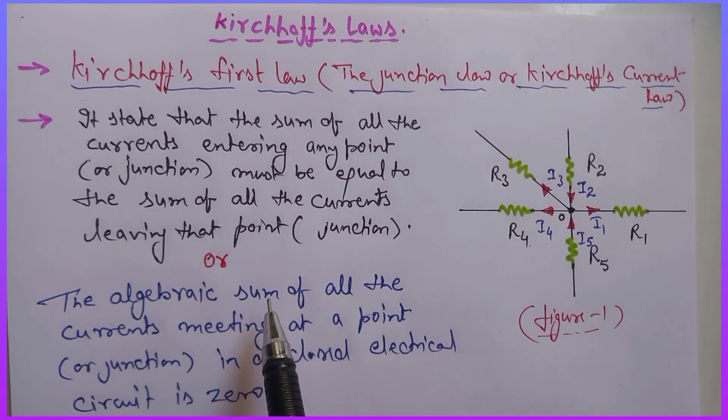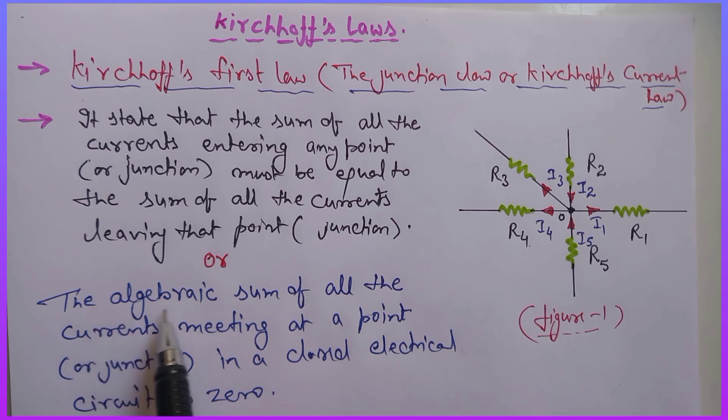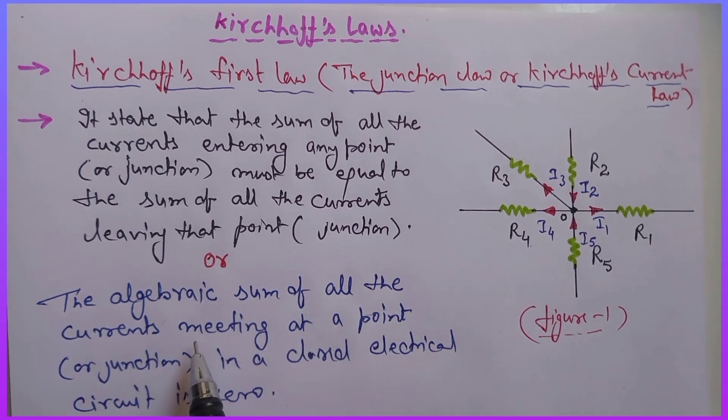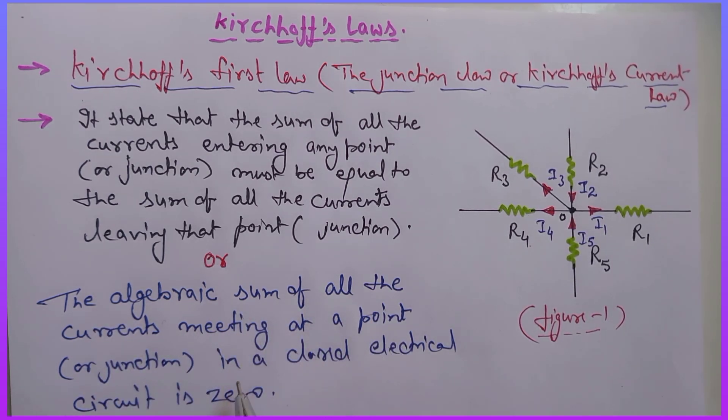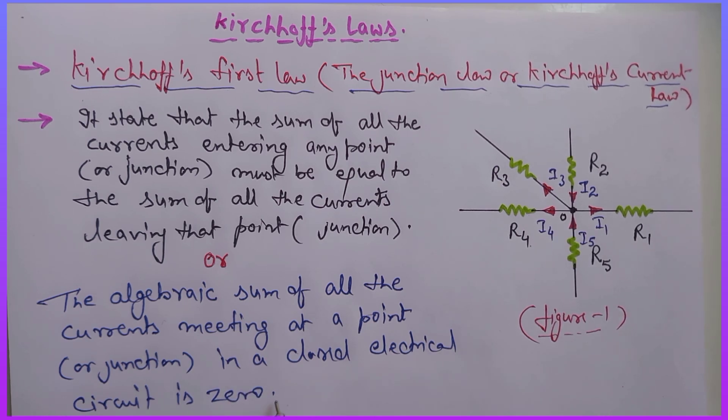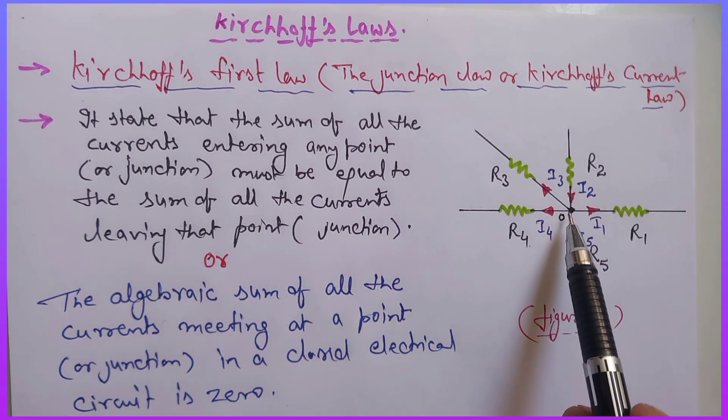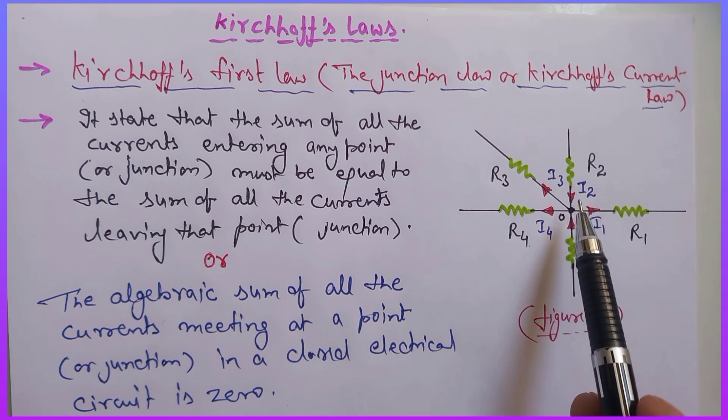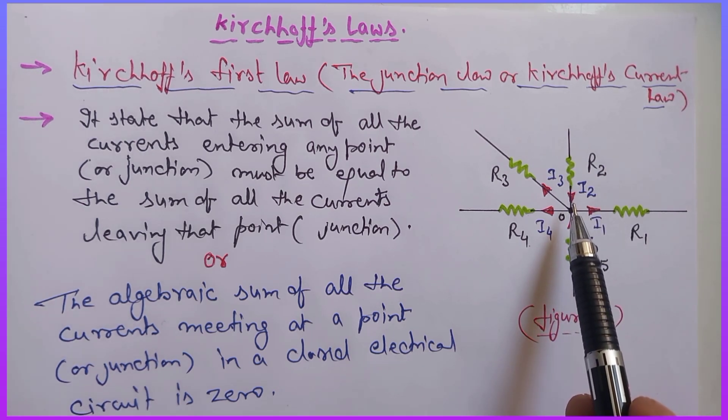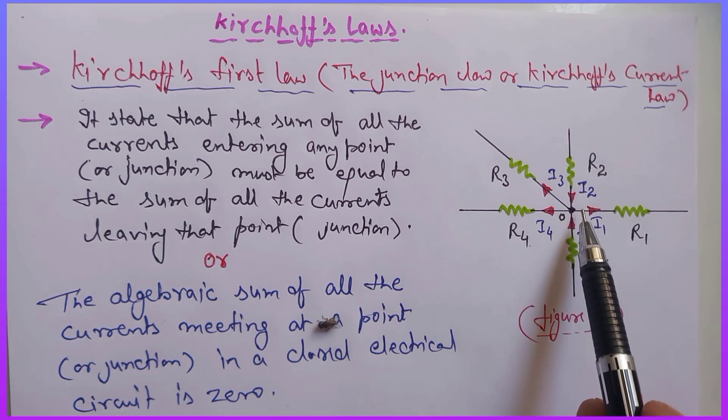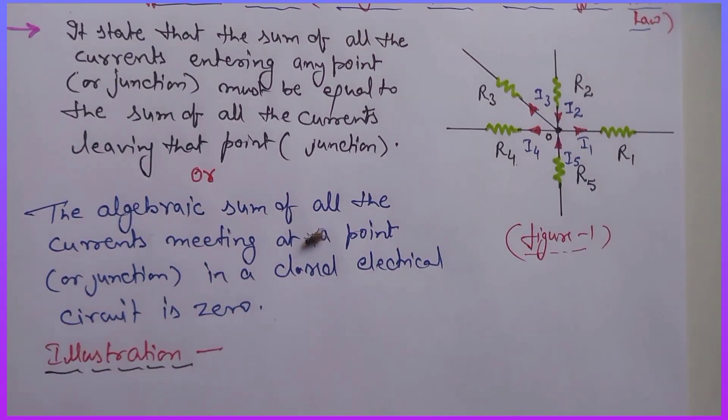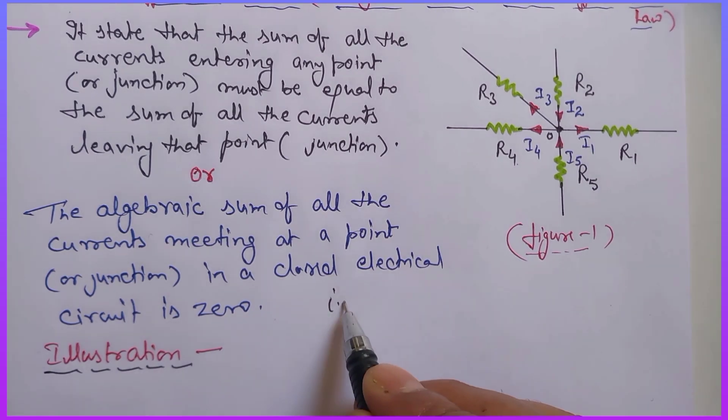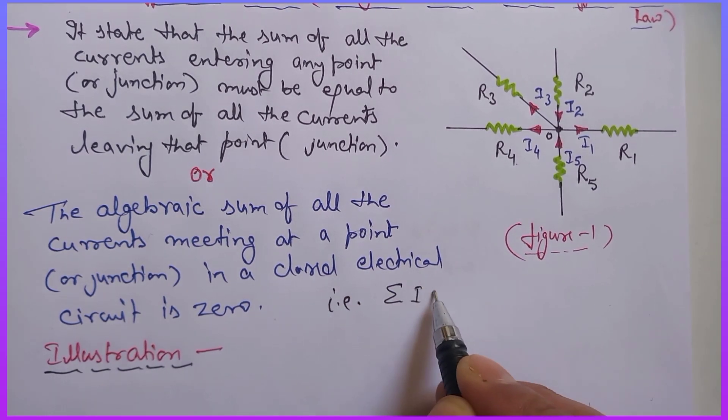It is also stated as the algebraic sum of all the current meeting at a point in a closed electrical circuit is zero. That is, the current entering a point and leaving, if we take the algebraic sum in a closed electrical circuit, it is equal to zero. That is, summation i equals zero.